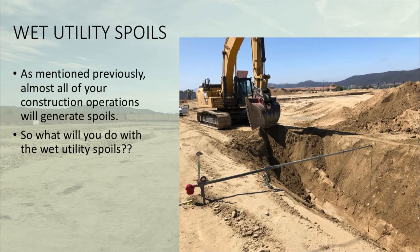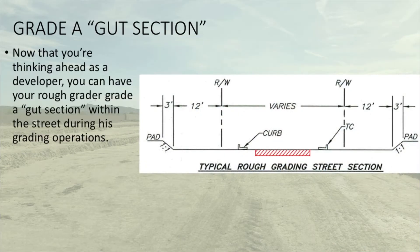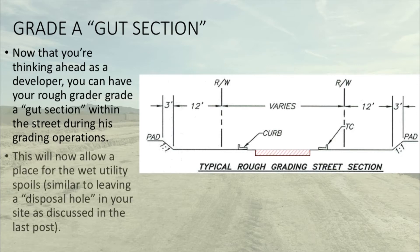As I mentioned numerous times in previous posts and videos, all your construction operations are going to generate spoils. So what are you going to do with the wet utility spoils? Now that you're thinking ahead as a developer, in order to best accommodate for the wet utility spoils, you can have your rough grader grade a gut section within the street during his grading operations. This will now allow a place for the wet utility spoils.